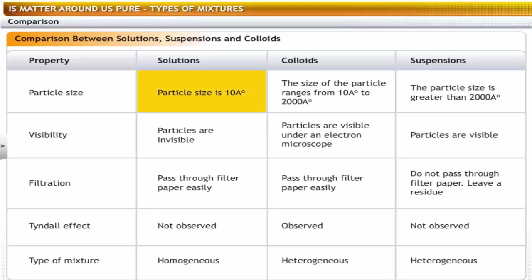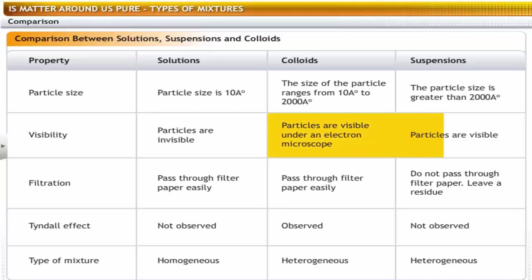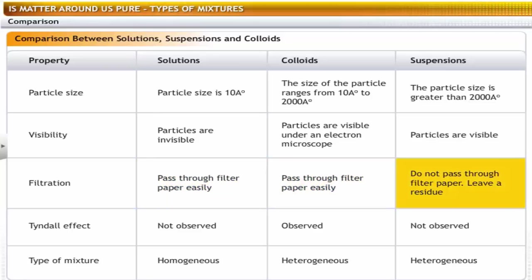In solutions the particle size is 10 angstroms. In colloids the particle size ranges from 10 to 2000 angstroms, while the particle size is greater than 2000 angstroms in suspensions. Particles are invisible in solutions, while particles are visible in colloids and suspensions. Particles in solutions and colloids pass through filter paper easily while the particles in suspensions do not. The Tyndall effect is not observed in solutions and suspensions, while it can be seen in colloids. A solution is a homogeneous mixture, while both suspensions and colloids are heterogeneous mixtures.